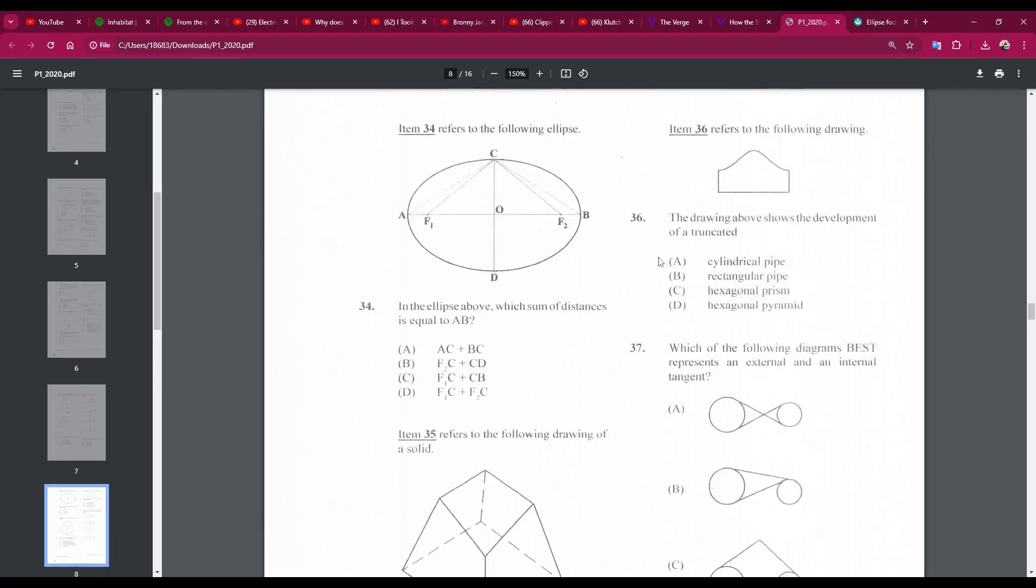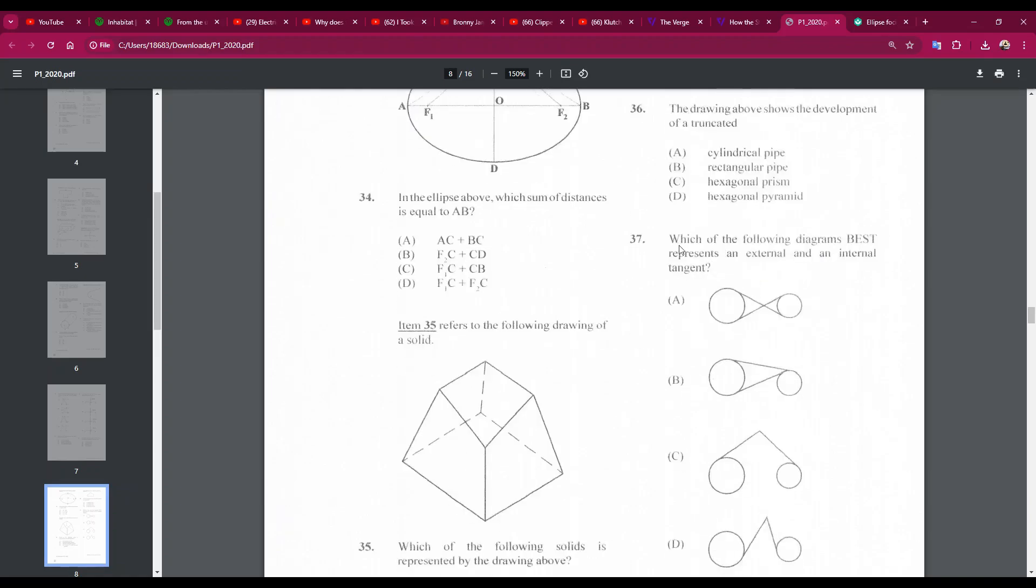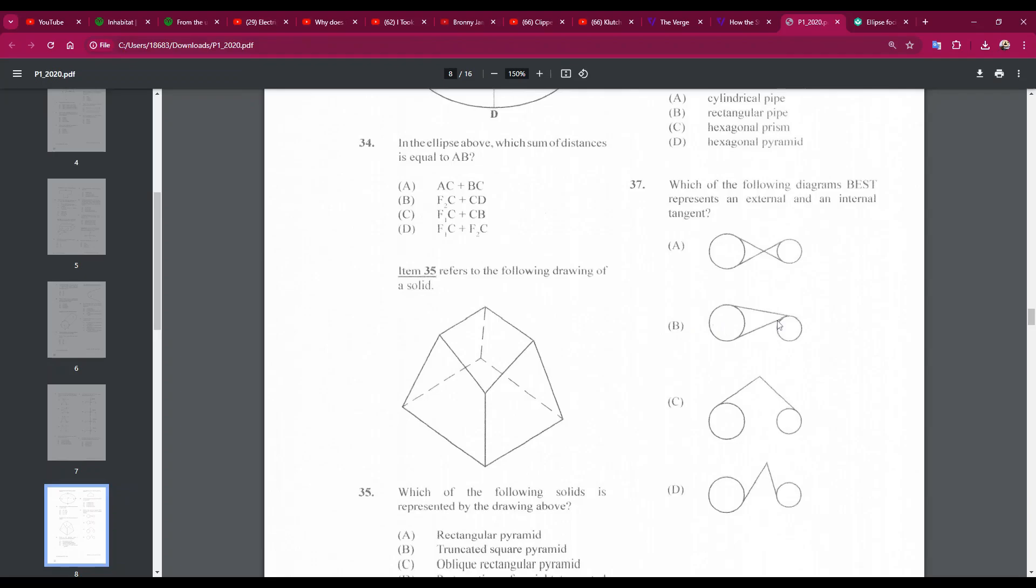Number 36: the drawing above shows the development of a truncated cylindrical pipe. All right, so we know it's a cylinder because there are no sides to it. It's just one smooth thing with a smooth development with a cut. So it's a cylindrical pipe. Number 37: which of the following diagrams best represents an external and an internal tangent? The answer is B. So this is our external tangent, and this is our internal tangent.